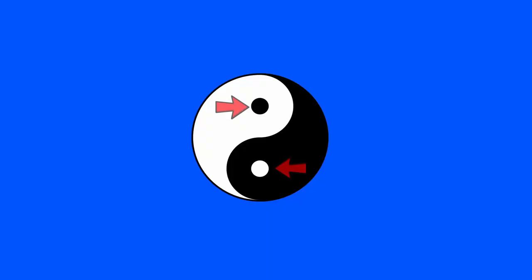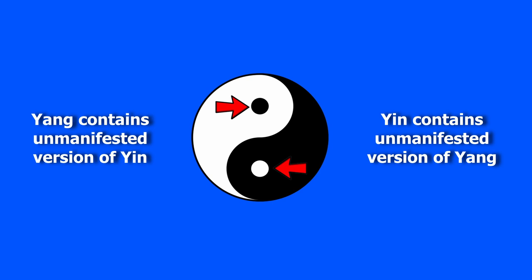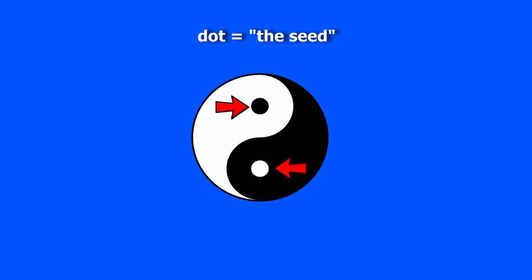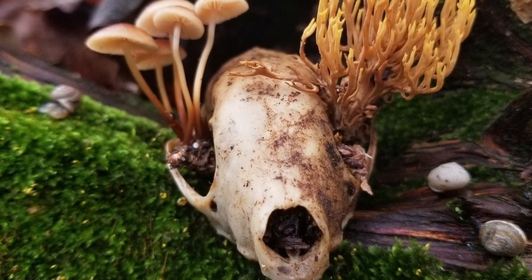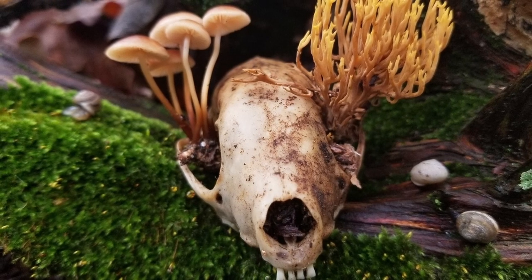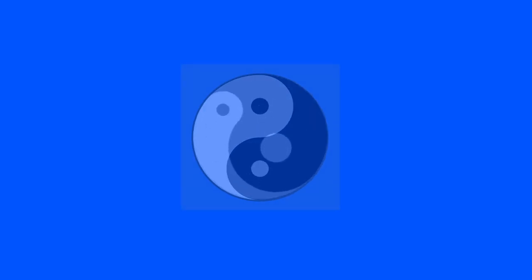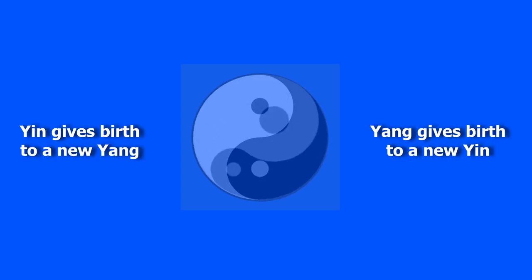As you can see in the diagram, at the extremes of the white and black swirls, there are two dots — a black dot in the white swirl and a white dot in the black swirl. This represents how yin always contains within itself the unmanifested version of yang, and yang always contains within itself the unmanifested version of yin. The dot basically represents the seed that gives birth to its polar opposite — so yin contains a seed of yang, and yang contains a seed of yin. You can think of this as life always containing the seed of death, and death always containing the seed of life, or creation always containing the seed of destruction, and destruction always containing the seed of creation. This seed is very important, because while yin and yang are always changing in this eternal dance, the seed actually allows yin to give birth to a new yang and yang to give birth to a new yin, placing life to continue in this eternal dance between opposites.